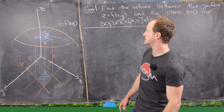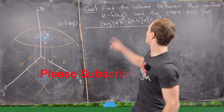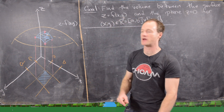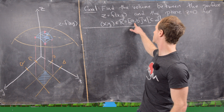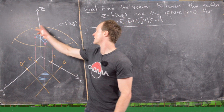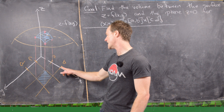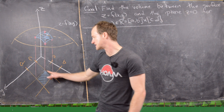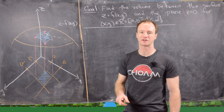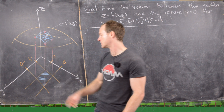We have a surface given by the equation z equals f(x, y), and our goal is to find the volume between this surface and the plane z equals 0 — the xy-plane — where x and y are in the rectangle [a, b] cross [c, d]. We've got this surface up here, z equals f(x, y), and down in the xy-plane we have the rectangle a to b and c to d, projected up to a patch on the surface. What we're looking for is the volume bound above by this patch and below by the xy-plane.